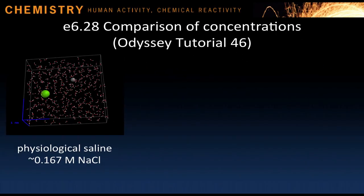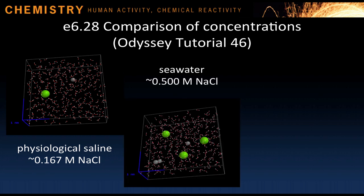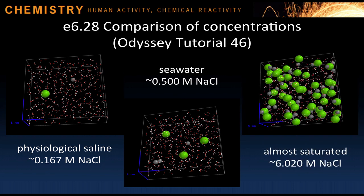In eResource 6.28, we go to Odyssey tutorial 46 to compare sodium chloride solutions with different concentrations. For example, physiological saline, about 0.2 molar sodium chloride, seawater, about 0.5 molar, and of course saturated sodium chloride, about 6 molar. This just gives you an idea of the relative crowding at different concentrations.